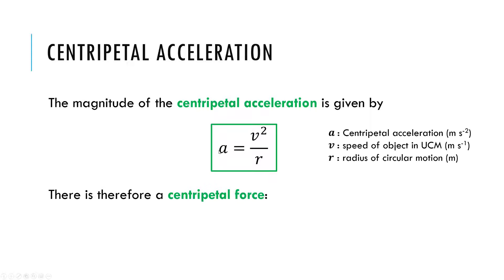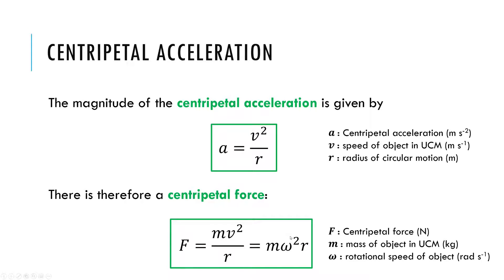And so if there's a centripetal acceleration, we could also talk about a centripetal force, which is going to be some kind of net force. Since I'm doing ma, which always gives me a net force, not just an individual force. This will be some kind of net force. Where I can do net force is ma, and my acceleration is V squared over r.